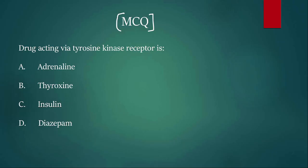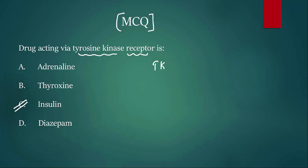The first MCQ: Drug acting via tyrosine kinase receptor — this is frequently tested. Options are: A) Adrenaline, B) Thyroxine, C) Insulin, D) Diazepam. If you said C, insulin, you are right. The tyrosine kinase receptor is activated by insulin.